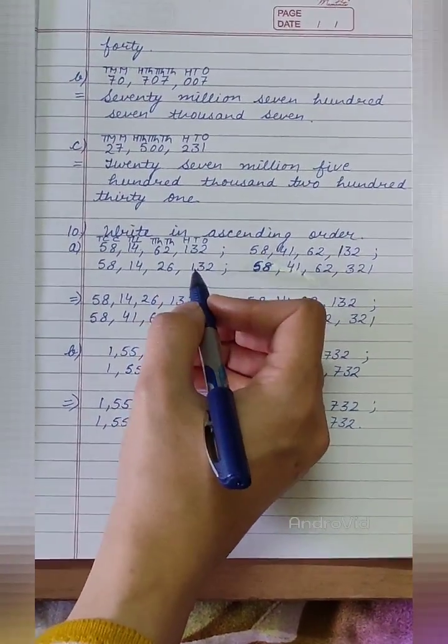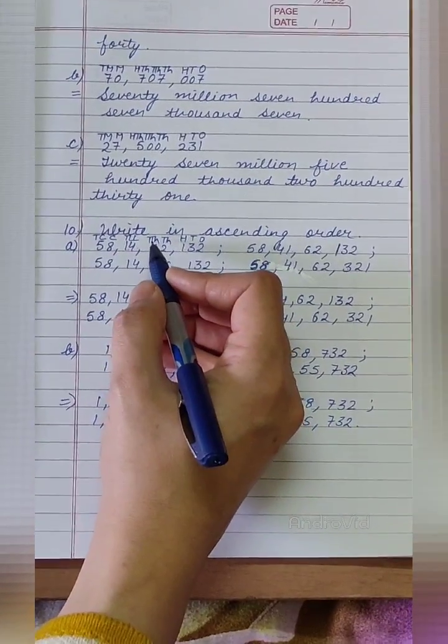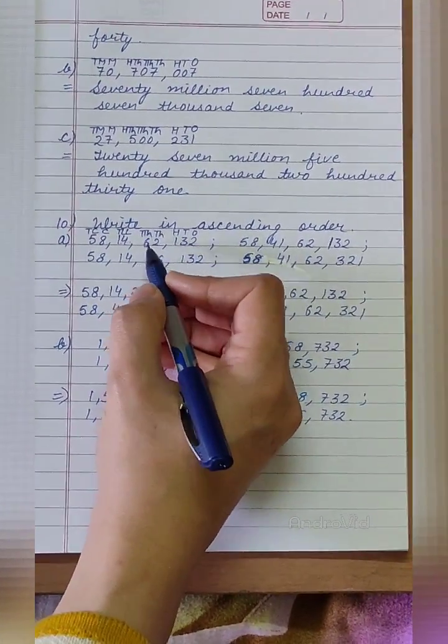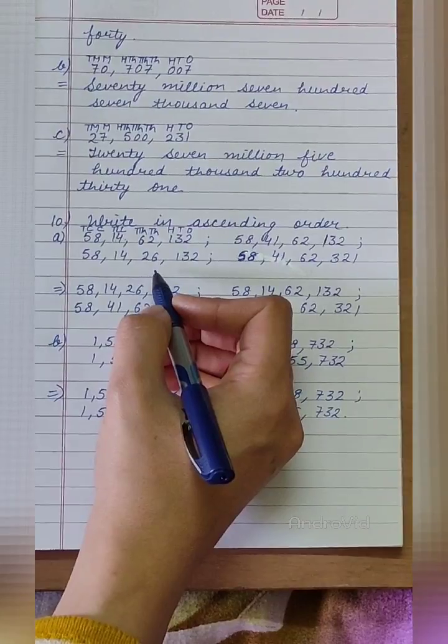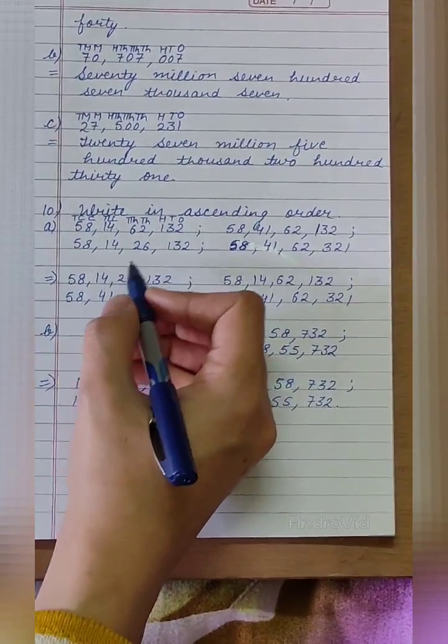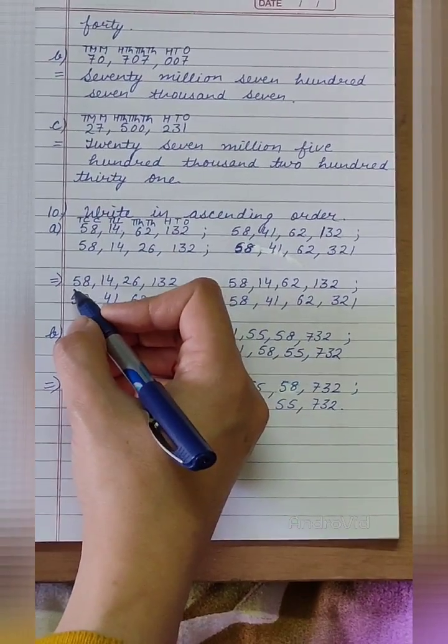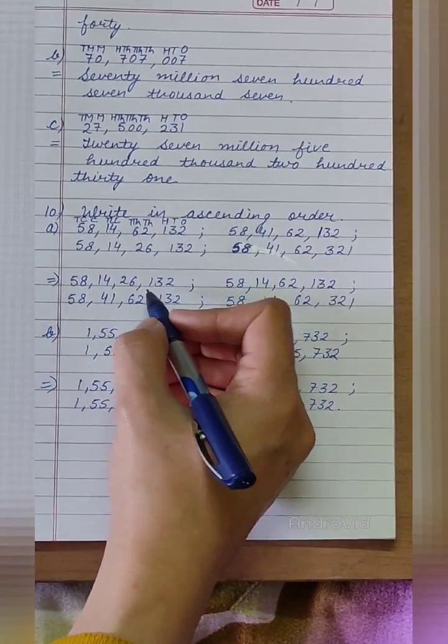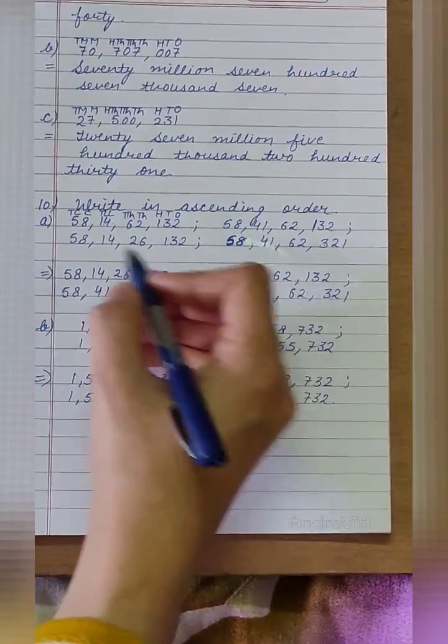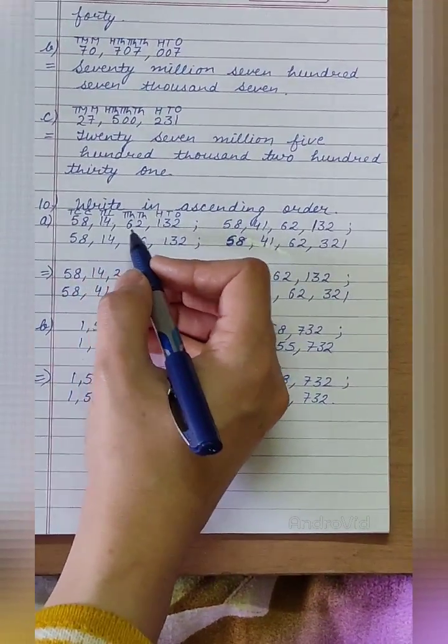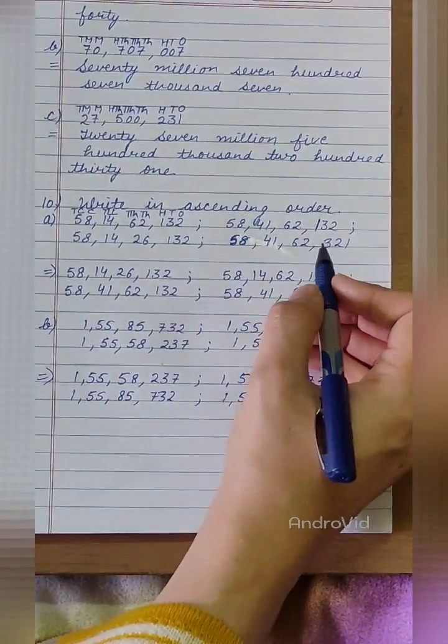In 1st and 3rd number, the digits at 10,000's place is 6 and 2. Since 2 is less than 6, the 3rd number will be the smallest number, that is 5814-26132. Next number will be 5814-62132.